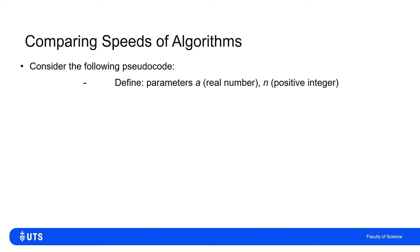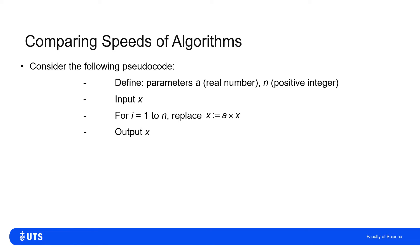For this pseudocode, I want to define two parameters: A has to be a real number and N has to be a positive integer. If I give it an input X, then N times over — for I going from one to N — it takes my existing X and replaces it with A times X. And then eventually, once it's done that N times, it'll spit out the last X.